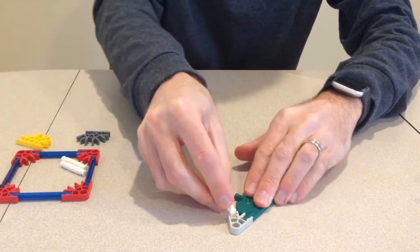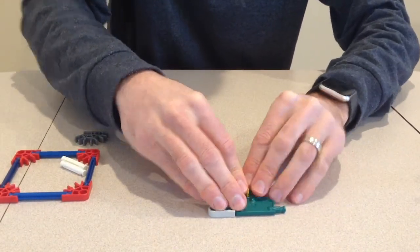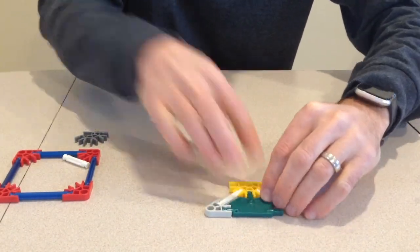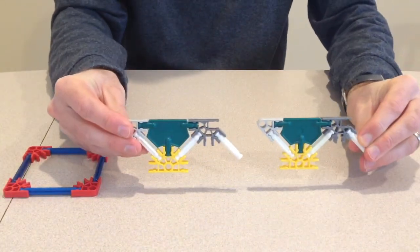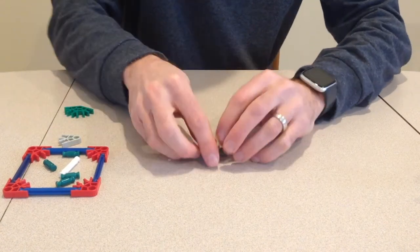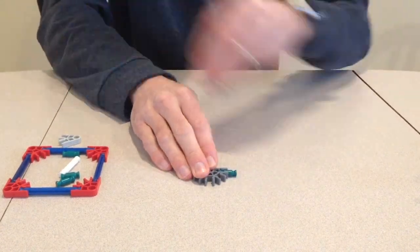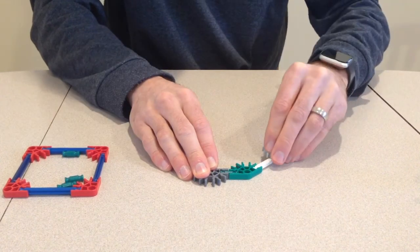And now, the sides of the cockpit. We'll have to build two of these parts. Now, let's finish the rest of the cockpit. We will also need two of these parts.